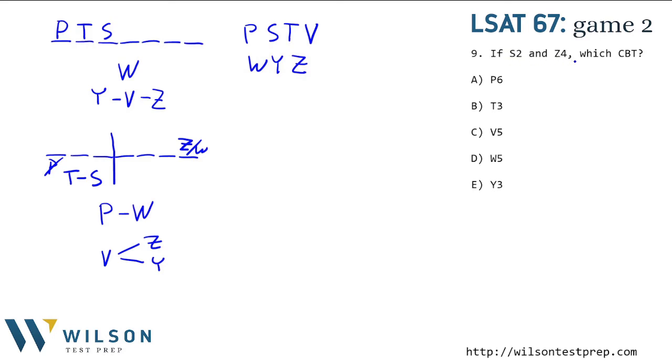Number nine says, if S is second and Z is fourth, which of the following could be true? So we're not in the world where P is first here. So let's copy this and see what we have. If I put S second, then I know I have to have T first. And if I have Z fourth, I have to have W here. And before Z is V, right? So V is here. So that leaves me with P and Y. All right, those are the only two things left, but I don't know which is in which order. So I'll write it like this. So which could be true? P in the sixth spot. Yeah. P and Y can switch either way. So that can happen. T in the third spot. No. V in the fifth spot. No. W in the fifth spot. No. Y in the third spot. Nope. A is correct. All the others are wrong.